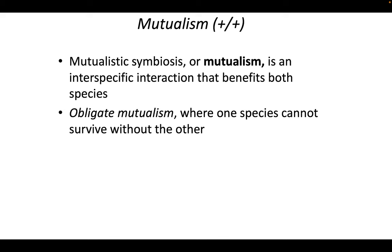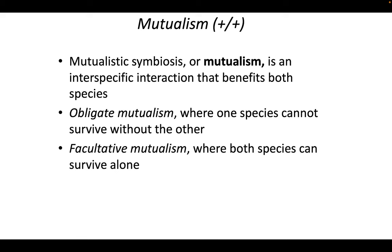With mutualism, there are two types. One is an obligate mutualism, where the species cannot survive without the other — it is obliged to live with that species. Then you have facultative mutualisms, where both species can survive alone but do better when they exist together.